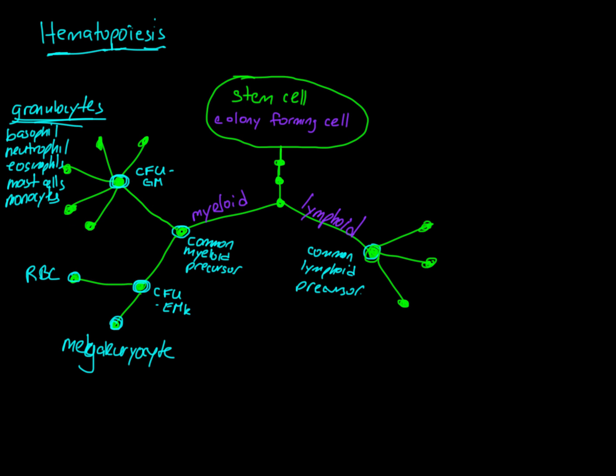Now, the lymphoid branch of hematopoiesis leads to the lymphoid cells, or the lymphocytes. Let's remind ourselves what the lymphocytes are. They're T cells, and B cells, and NK cells. And that is what's represented here with these three pathways.